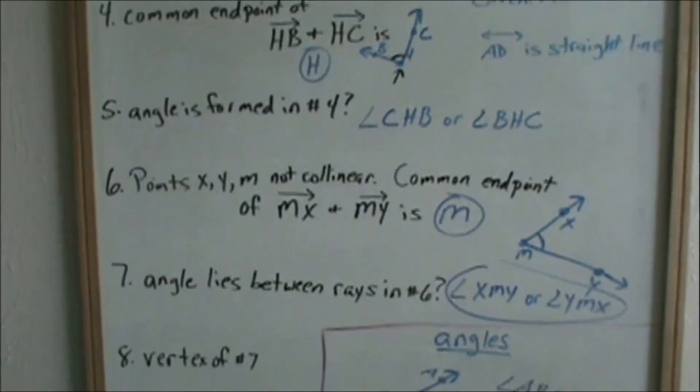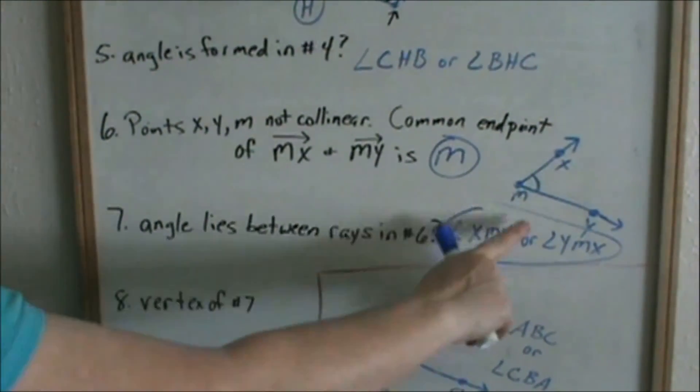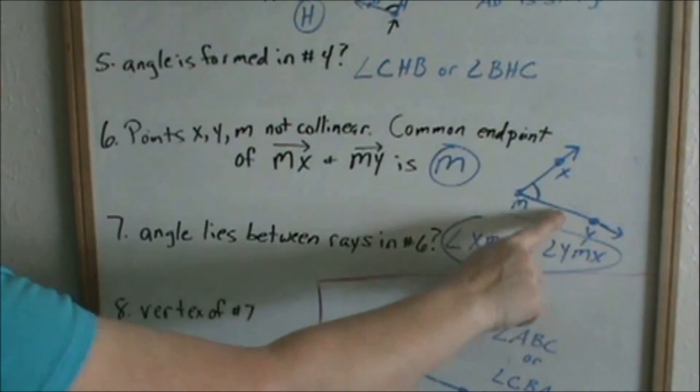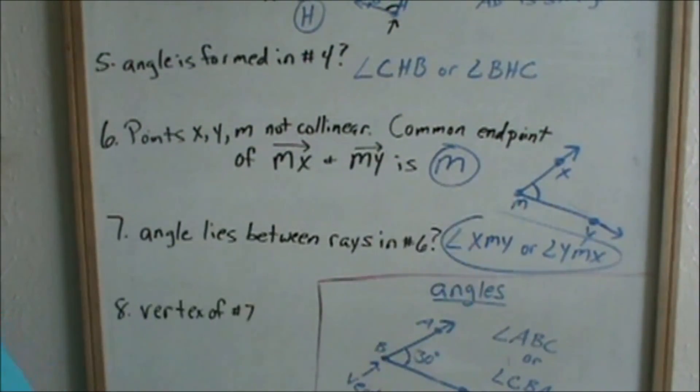Number eight then says, what is the vertex of number seven? If you have this angle, what is your vertex? Your vertex is always the middle letter. It's always where the two rays are joined together. So in this case, your vertex is M.